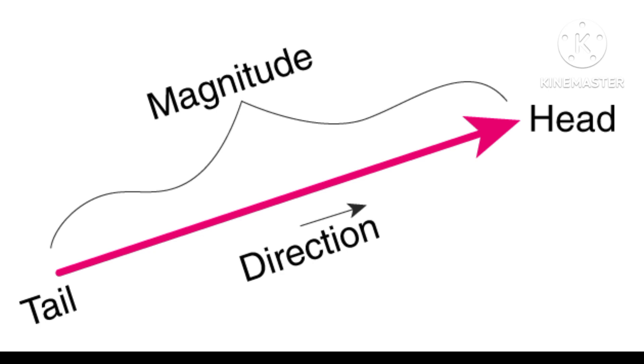The distance between tail and head is called as magnitude and here is the direction, so forward direction because it is a direction. And two terms we use, scalars and vectors, to find out the magnitude and direction.